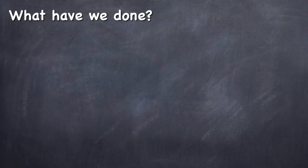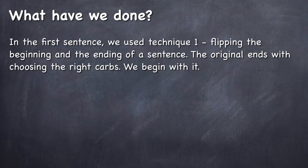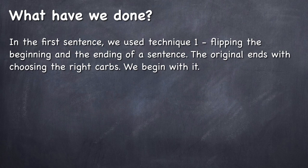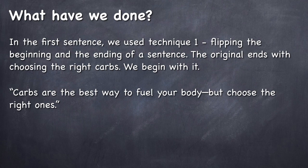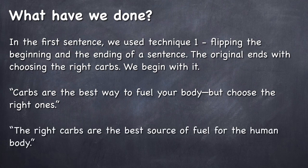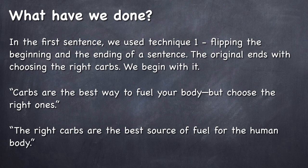Alright, so what have we done here? In the first sentence, we used technique 1, which is flipping the beginning and the ending of a sentence. The original ends with choosing the right carbs. We begin with it. See, this is the original. Carbs are the best way to fuel your body but choose the right ones. And this is our version. The right carbs are the best source of fuel for the human body. See how the original sentence talks about the right type of carbs towards the end. And we begin with the right type of carbs.